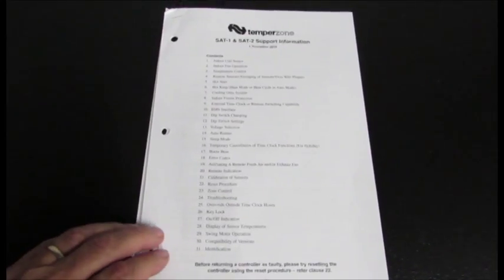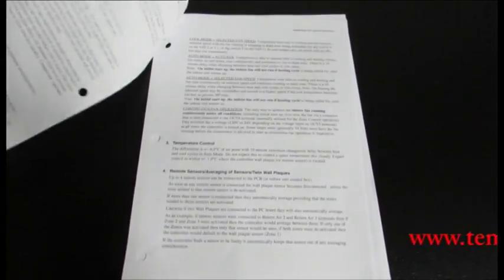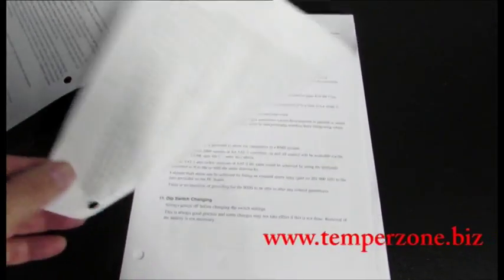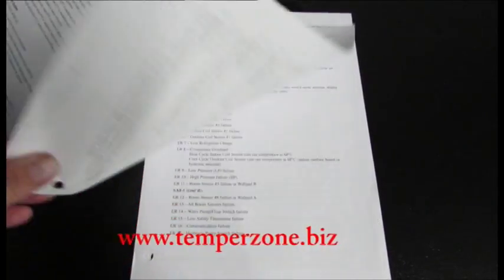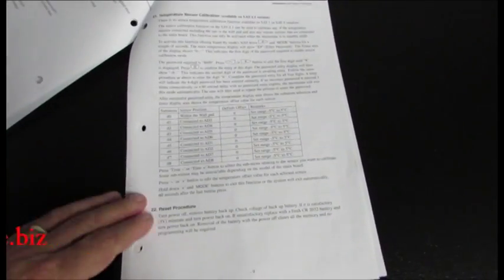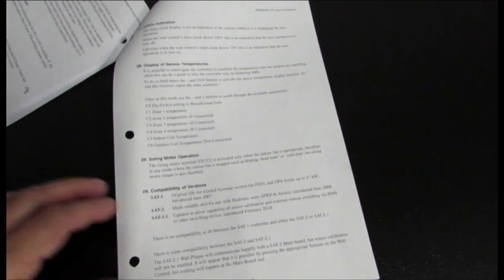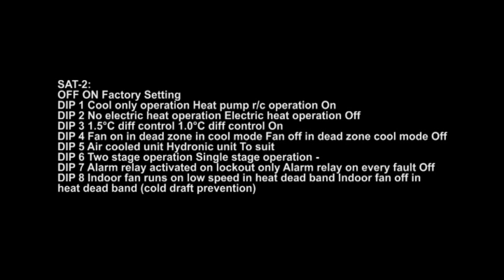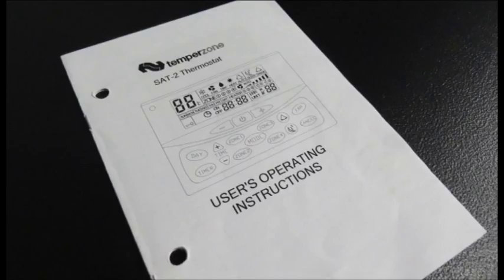There are something like 24 possible error messages, and these would appear at the display on the bottom right-hand corner. It's not practical here to go through all of these, but there is a support document on our website www.temperzone.biz that gives a lot of extra background information, including all the error messages, troubleshooting, and how to calibrate the sensor if the display is not reading the temperature correctly, of course. The user manual also contains some simple troubleshooting information and instructions on how to use the remote control for some of the function settings.